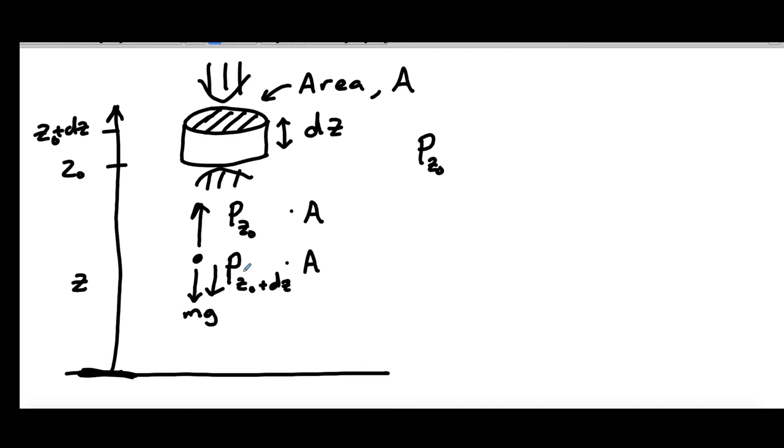So now we can write an equation. We can say the force upward, at equilibrium, the force upward is just p at z0 times A. And that's equal to the force downward, which is p at z0 plus dz times A, plus this mg term, where mg is just the mass of that puck.